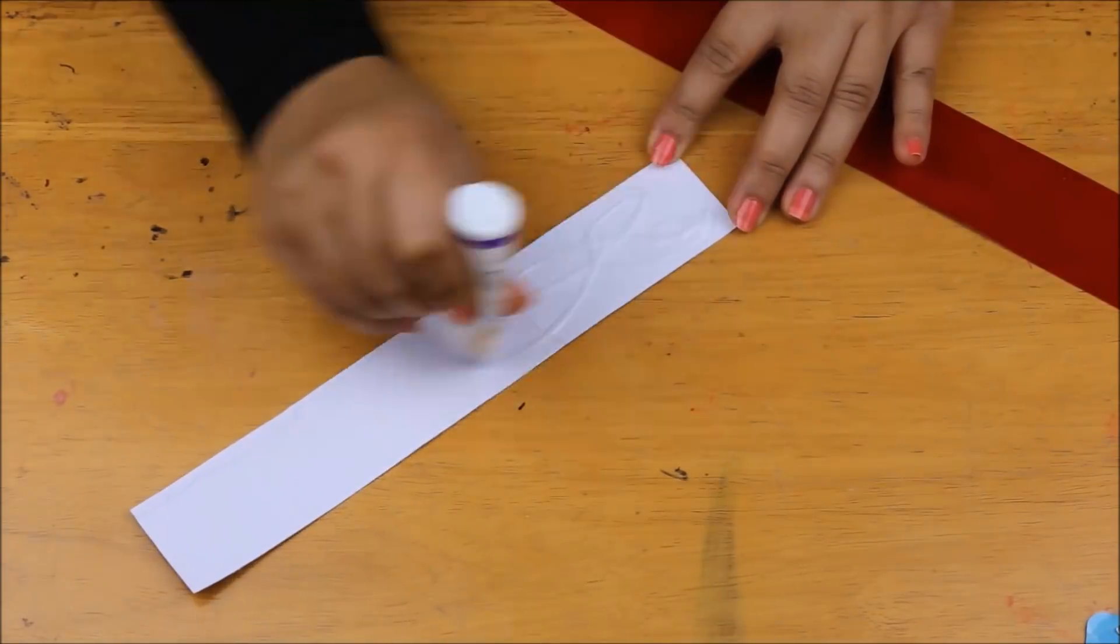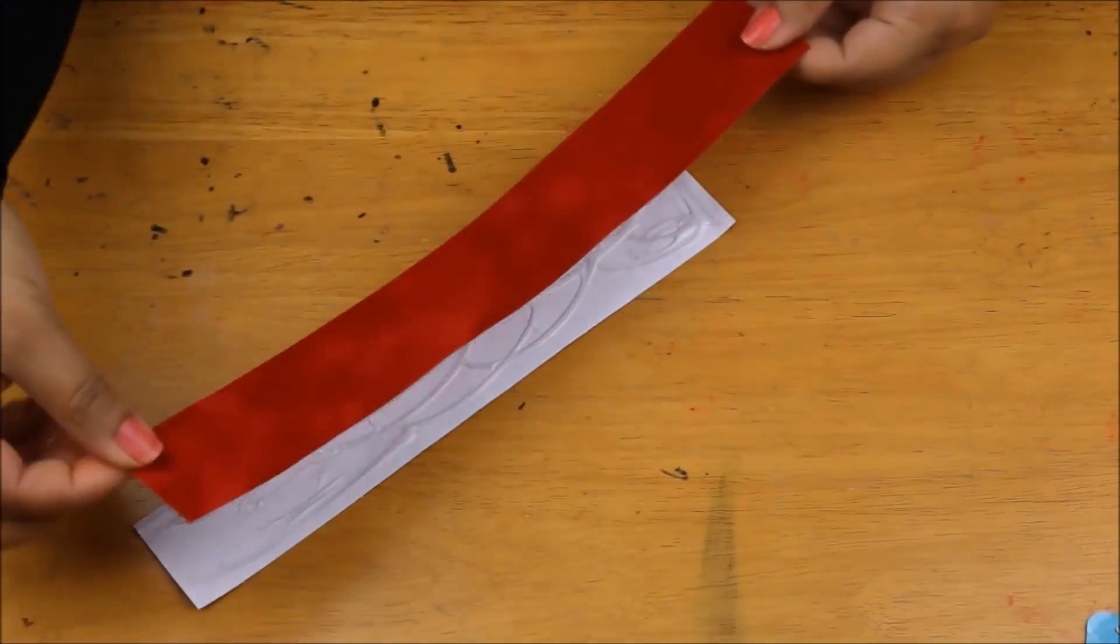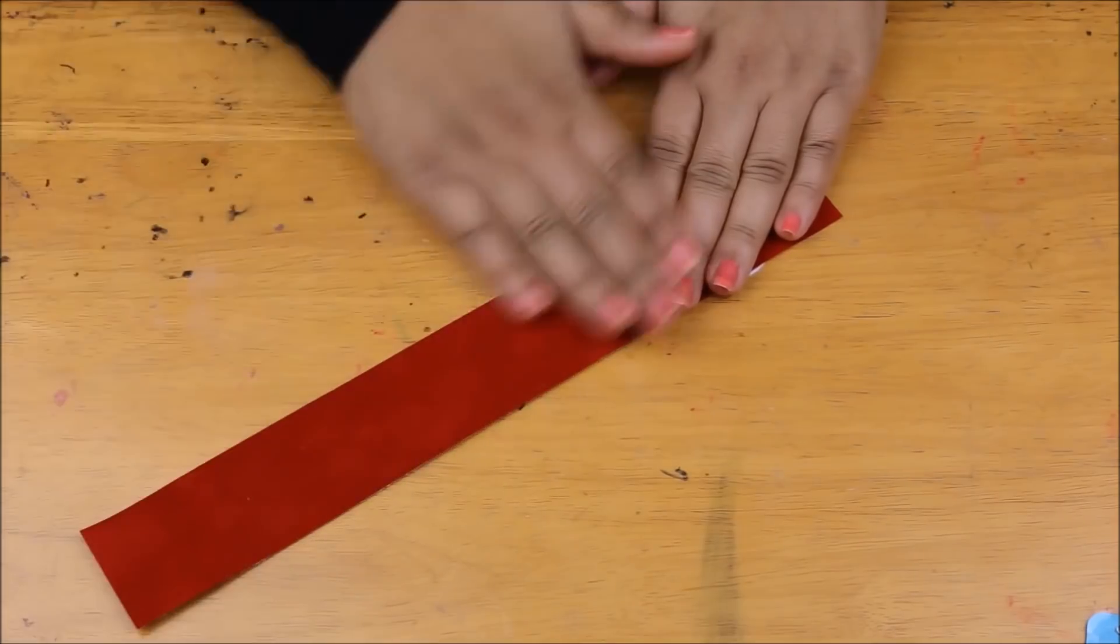To make this velvet paper sturdy, I'm going to cut a similar size in my cardstock and I'm going to stick the two together.